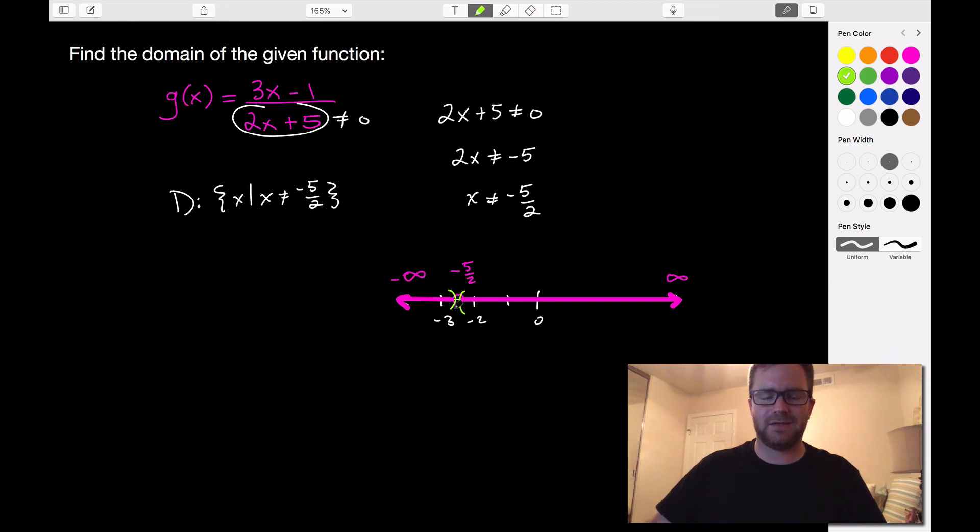So our domain in set notation, sorry, this is set notation, in interval notation is the set from negative infinity to negative 5 halves. And then we use parentheses on both of these because neither of them are included in our solution set. And then the union of that with the other set from negative 5 halves to infinity, negative 5 halves to positive infinity.